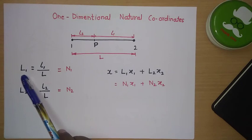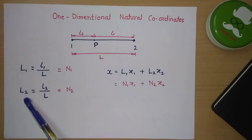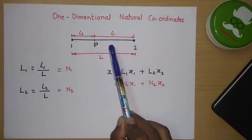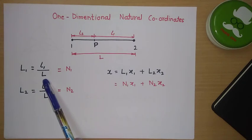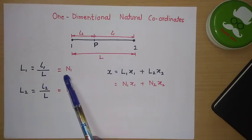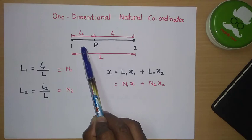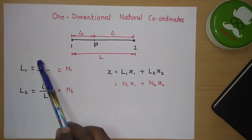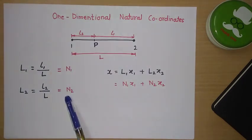L1 and L2 are the natural coordinates for a one dimensional element — we use two natural coordinates. The first natural coordinate, for node 1, is given by L1 divided by total length L, that is L1/L. The second natural coordinate is the length opposite to node 2, L2, divided by total length, that is L2/L. So L1 equals N1 and L2 equals N2.